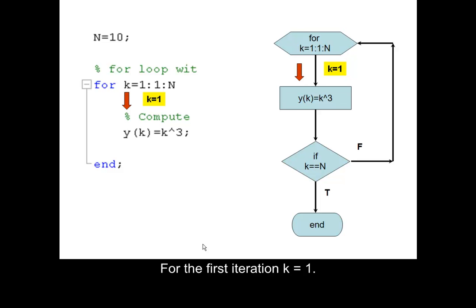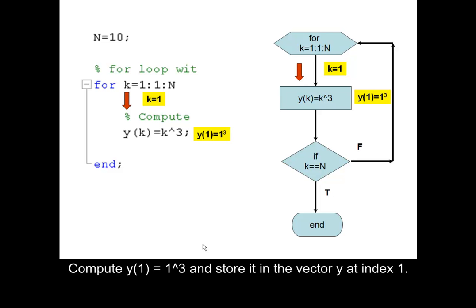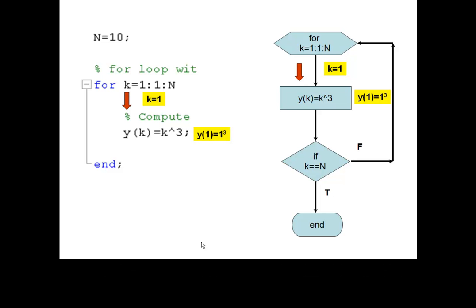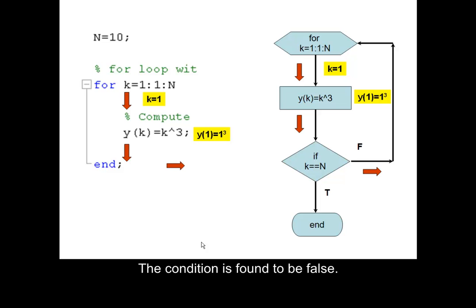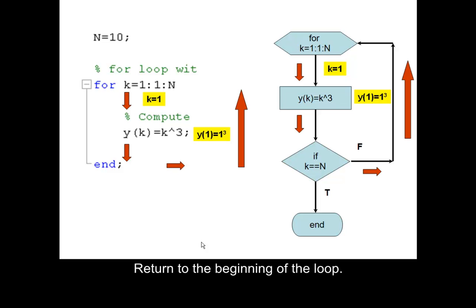For the first iteration, k is equal to 1. Compute y equals 1 cubed and store it in the vector y at index 1. Check the condition: if k is equal to n — for this iteration, if 1 is equal to 10. The condition is found to be false.